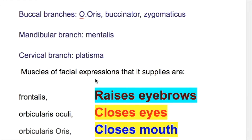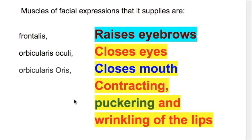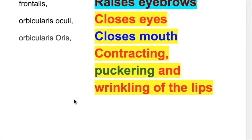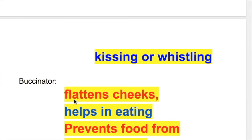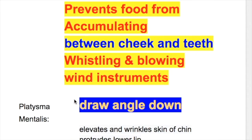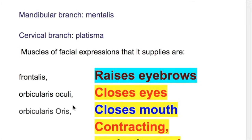The muscles of facial expression that the facial nerve supplies are: frontalis, orbicularis oculi, orbicularis oris, buccinator, platysma, and mentalis.